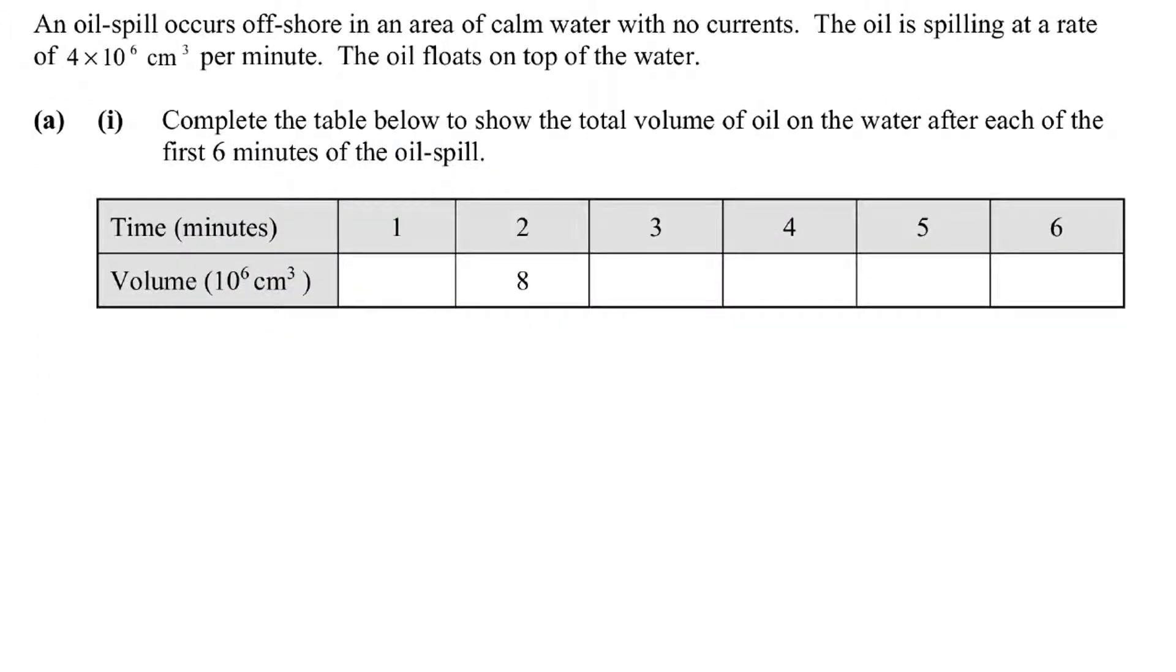So we're moving on to this second question. It said an oil is spilling out at a rate of 4 × 10^6 cm³ per minute. The oil floats on top of the water. Complete the table to show the total volume of oil on the water after each of the first six minutes. So I know every minute it goes up by 4 × 10^6. But the volume they've given us already has the 10^6 in it. So in the first minute there'll be 4, then 8, then 12, 16, 20, 24. That is as straightforward as that.